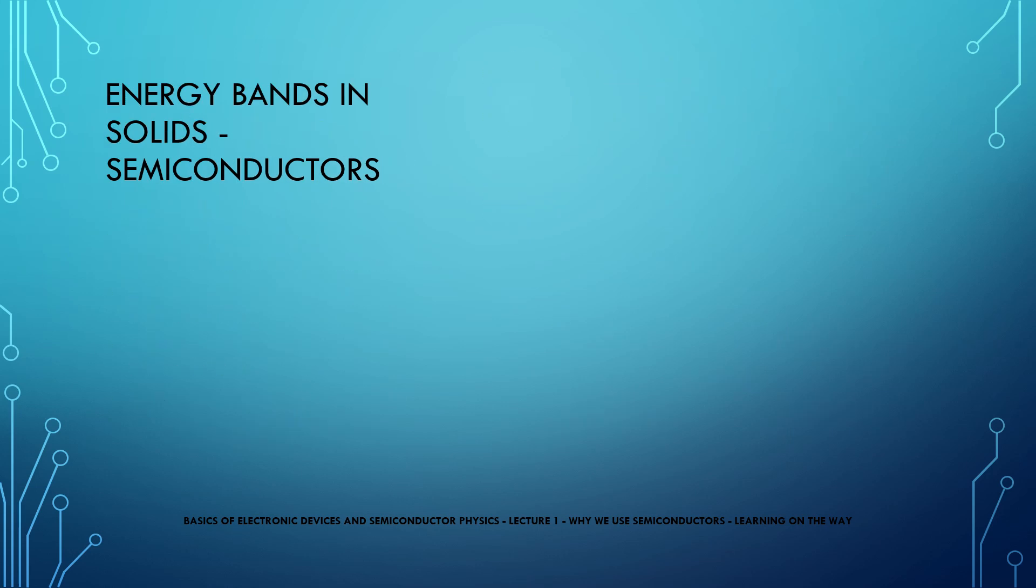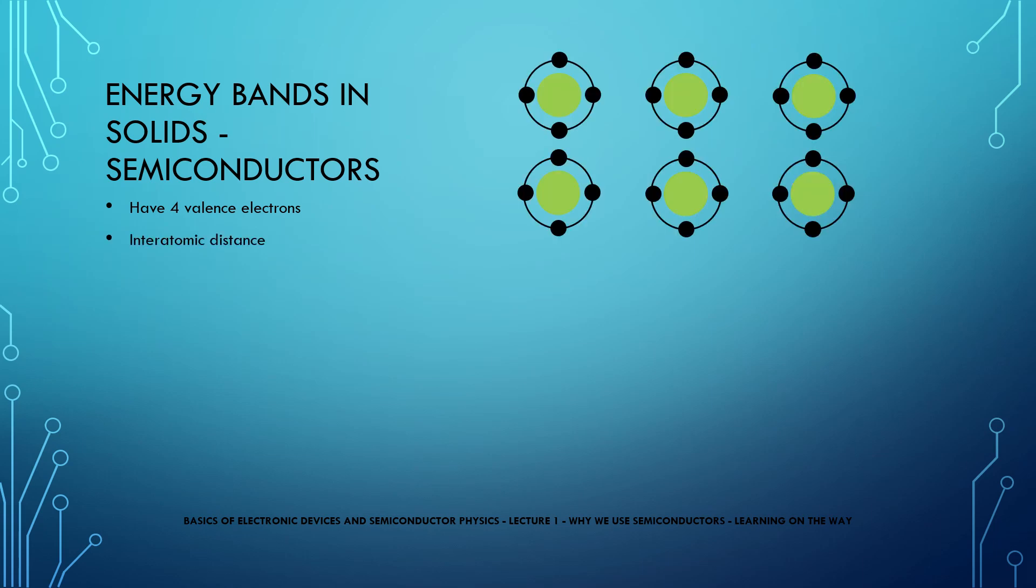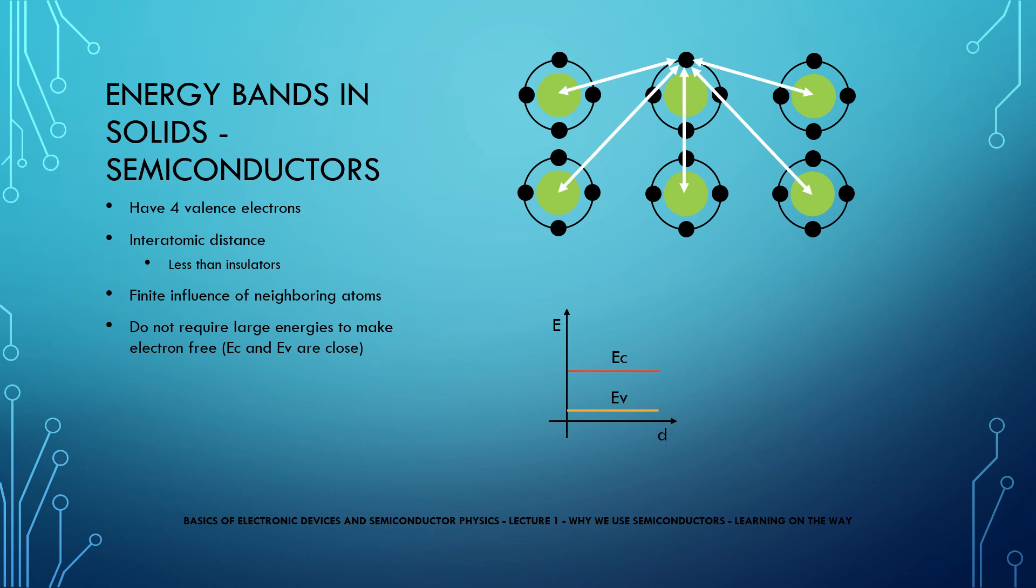Finally when we come to semiconductors, they have 4 electrons in their outermost shell and the interatomic distance is less than insulators. As a result there is a finite amount of influence of neighboring atoms on electrons of a specific atom. Hence they do not require a lot of energy to make the electron free.